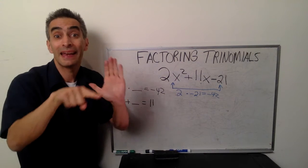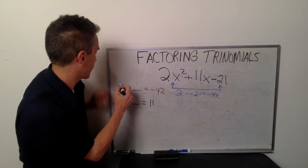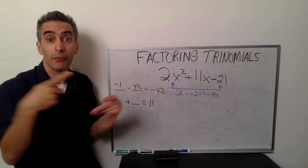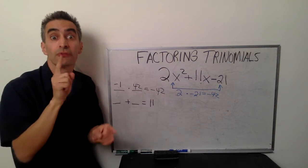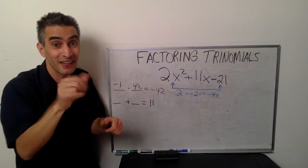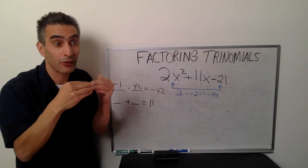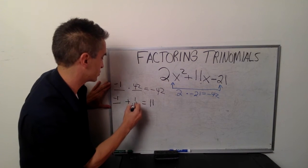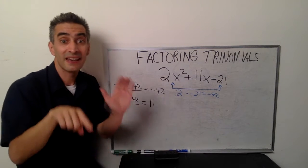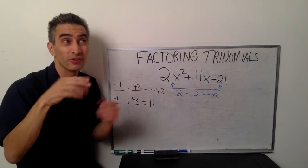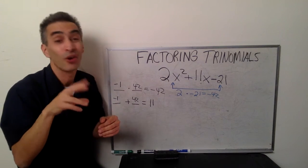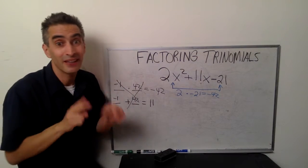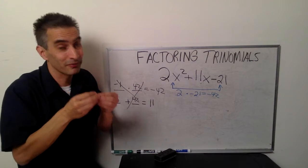We're going to try negative 1. Negative 1 times 42 equals negative 42. But remember, the same two numbers have to add up to equal 11. Negative 1 plus 42 — does that equal 11? No. That means we can't use that. Those aren't the magic numbers.